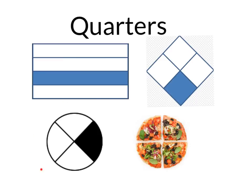This is a circle. It has been divided into four equal parts. And here is a pizza that has been cut into four equal parts. Each piece is the same size. That is one quarter.